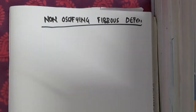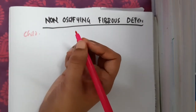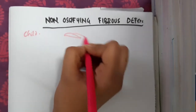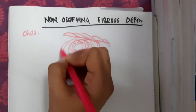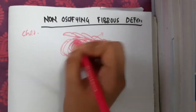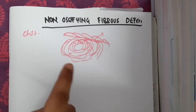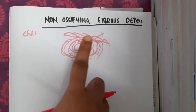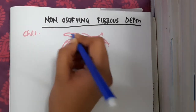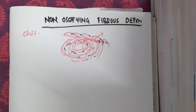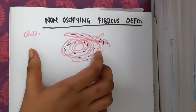Non-ossifying fibrous defect is the commonest benign lesion, occurring in 35% of children, and is usually found as an incidental finding. Histologically, it shows spindle-shaped cells arranged in a whorled (storiform) arrangement, and is also called a storiform lesion. It is characterized by high fibroblastic proliferation, resulting in high cellularity of the tumor.